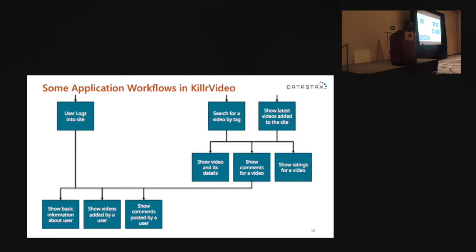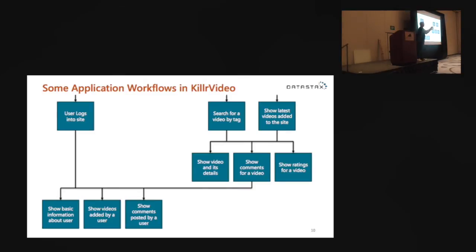For our video sharing site, Killer Video, here's an example of some workflows. Starting at the top left: a user shows up at the site, they log in, and then we show them their profile information — basic profile data, the videos they've posted, and the comments they've added to various videos. In the top right corner, we have more video-centric workflows: a user searches for a video by tag, or we show them the latest videos added to the site. They can choose an individual video, and once they click on it, we show the video and its details, play it back, show comments, and show ratings — a one-to-five star system like Amazon or Netflix.